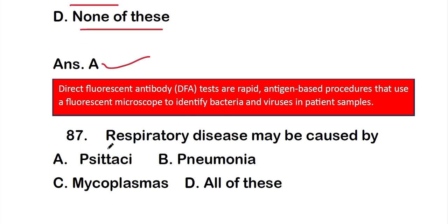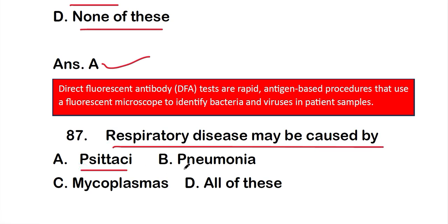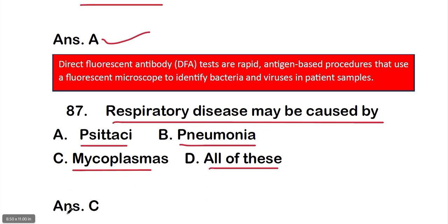Question number 87: respiratory disease may be caused by option A, C. psittaci; option B, pneumonia; option C, Mycoplasma; or option D, all of them. The right answer is option C — Mycoplasma. Respiratory disease may be caused by Mycoplasma.